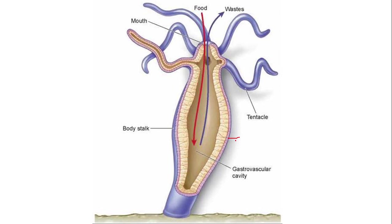The inner layer of cells is called the gastrodermis. The gastrodermis is derived from the inner layer of cells present in the embryonic form, which we called the endoderm. So the endoderm gives rise to the layer now called gastrodermis. The function of the gastrodermis is that it is the nutritive epithelium — it helps in digestion and nutrition for the hydra.